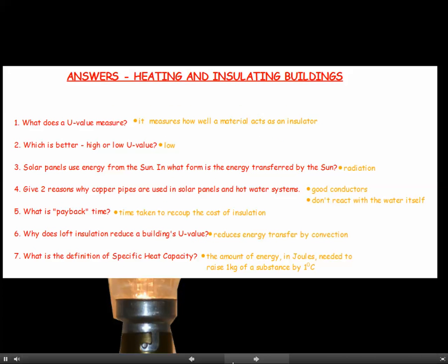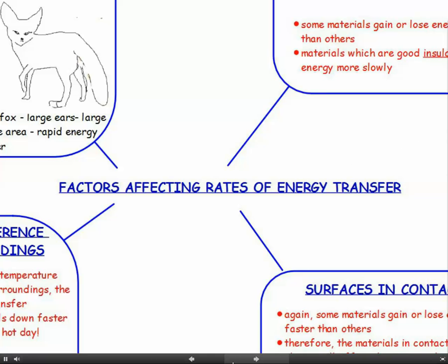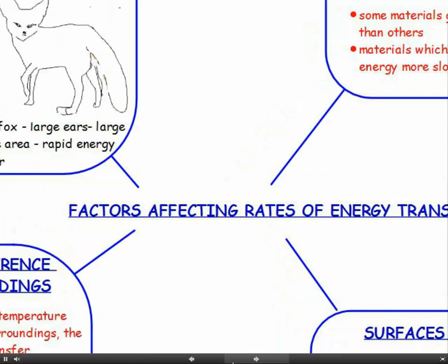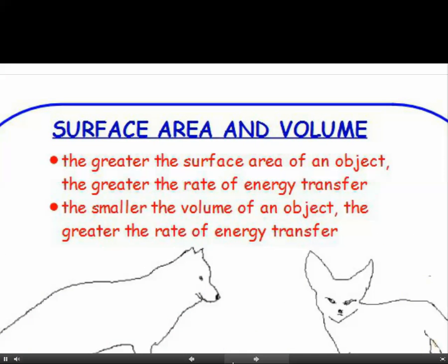Here are the answers to the questions at the end of the previous chapter — hopefully you've got all these right. Tick these off before we go on to factors affecting rates of energy transfer. Surface area and volume will affect the rate of energy transfer. The greater the surface area of an object, the greater the rate of energy transfer, and the smaller the volume of an object, the greater the rate of energy transfer.